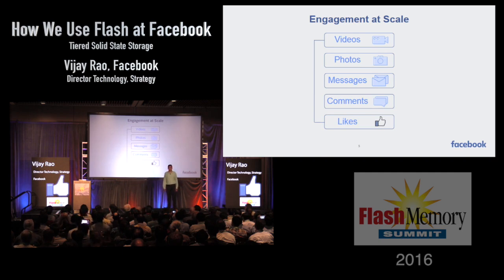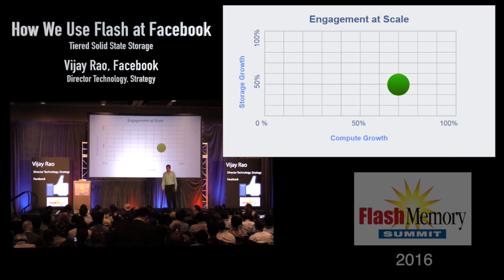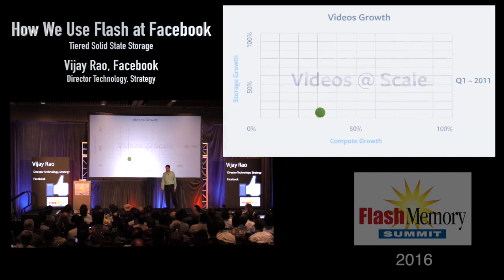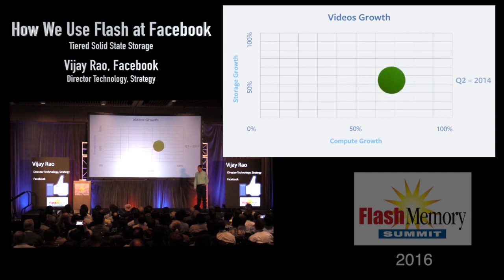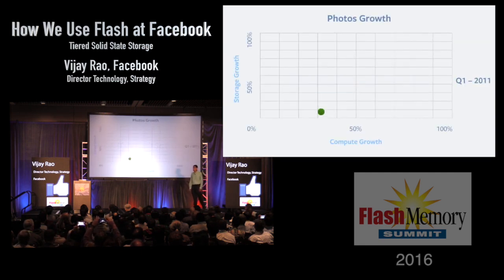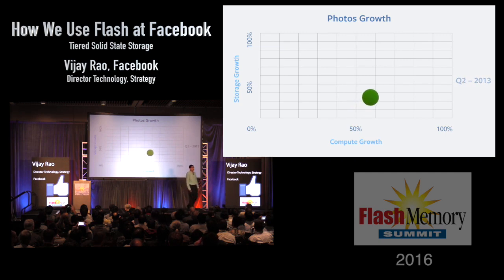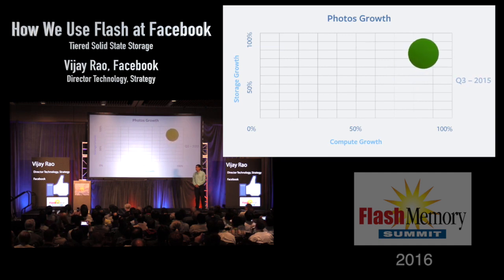These are some of the metrics that we track at Facebook to measure engagement. Engagement is key — I'll be saying that quite a few times during the presentation. The x-axis represents compute growth over time, the y-axis represents storage growth over the same period, and the area of the bubble represents the particular engagement metric. As you can see, the bubbles grow, compute is growing, and video really picked up much later — around 2014. This does not include live video or Instagram. Photos, also not including Instagram, were a prime driver for engagement in the early parts.